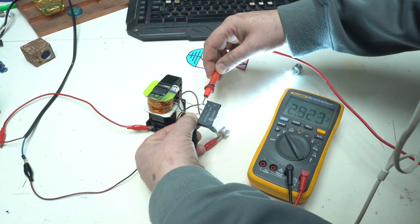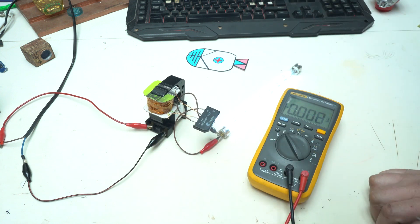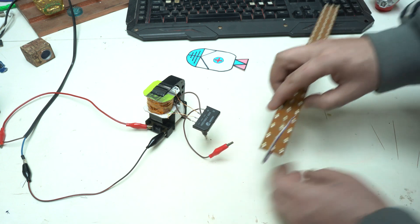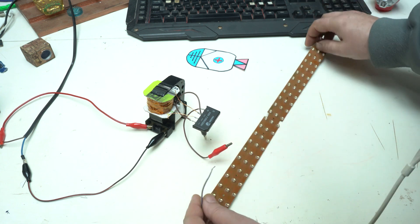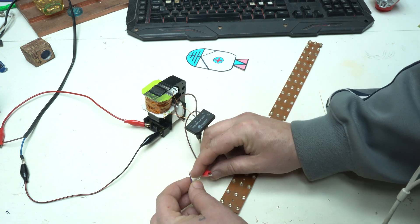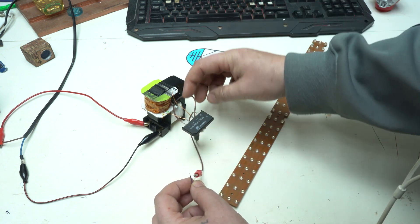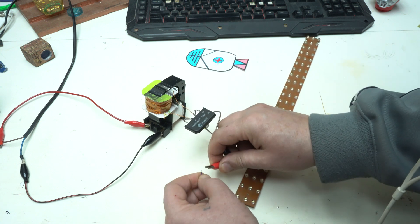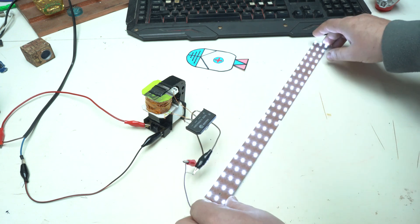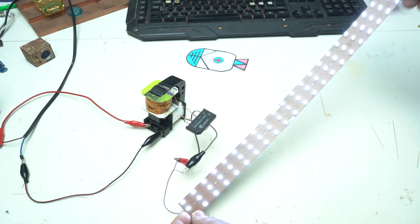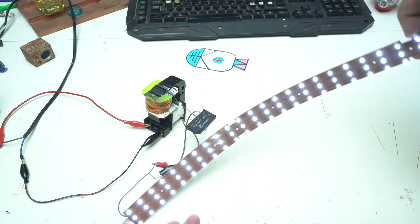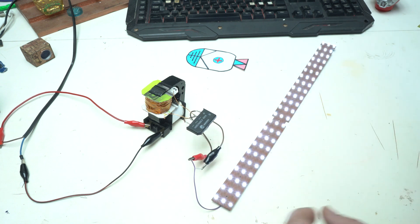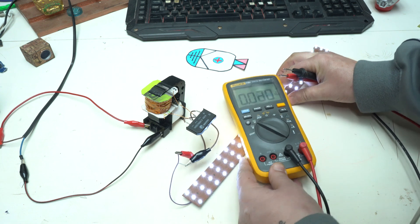Okay now I'm gonna try these 60 plus LEDs all connected together. This is the negative, this is the positive, and it's working. Now let's measure the voltage.